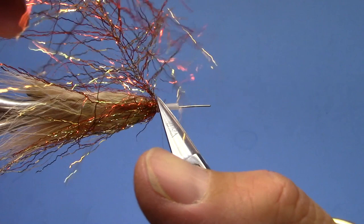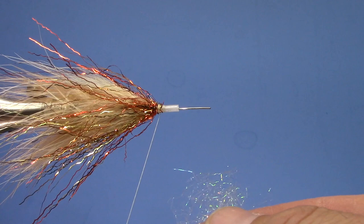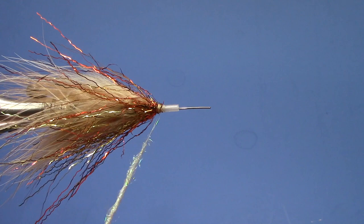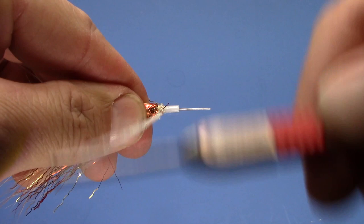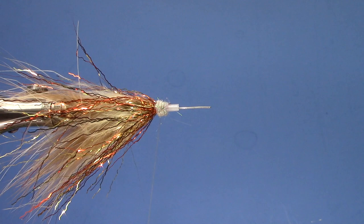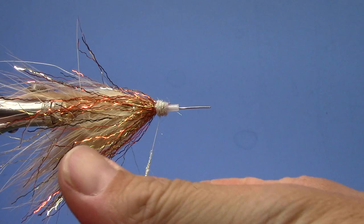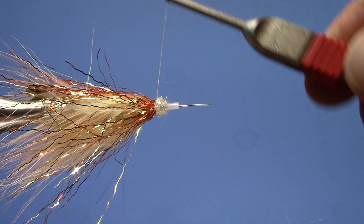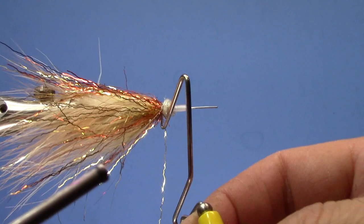The last thing I'm going to do is I'm going to build a nice round ball of ice dub. I'm going to use pearl here. Periodically just tighten that back up. I might even add just a tad bit more. And I'll just go ahead and whip finish. I'm going to whip finish in front of the ball just to kind of hide the thread in there. Go ahead and trim out that thread.